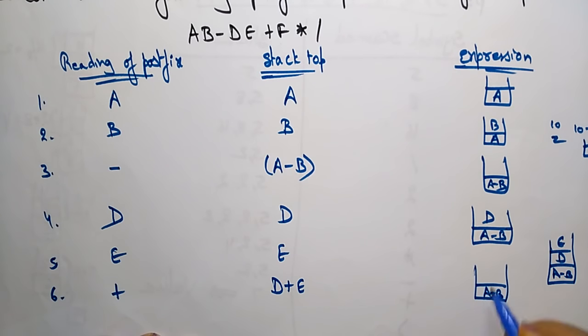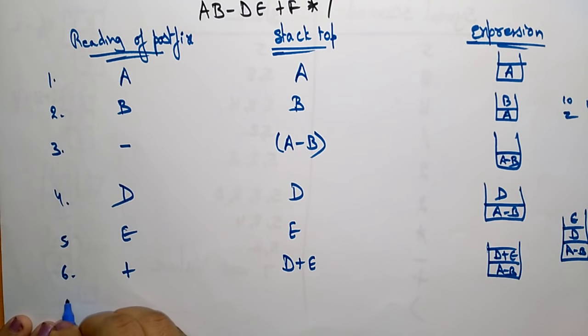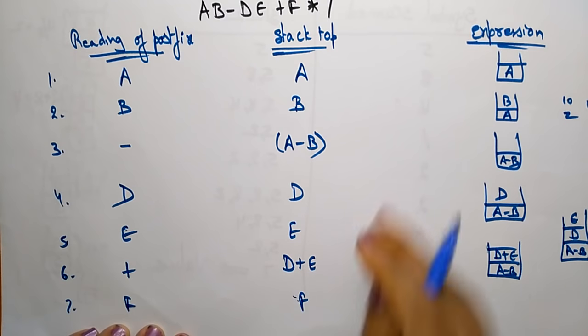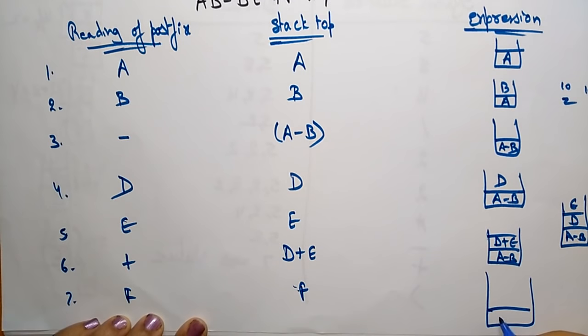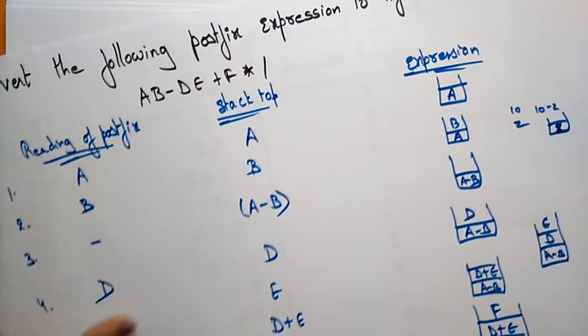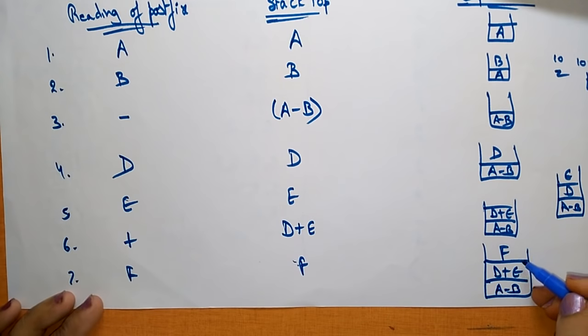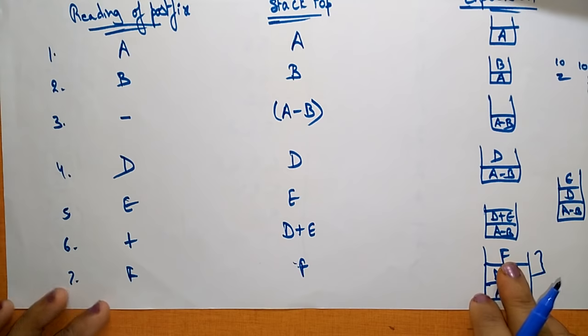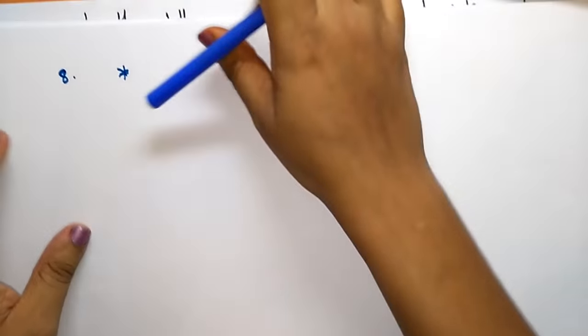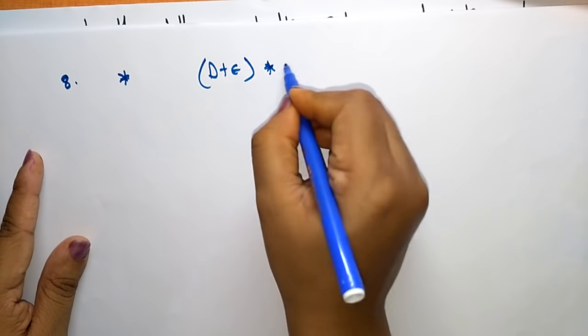Now the stack contains A minus B and D plus E at the top. Next we read F from the postfix expression and place F on the top of the stack, so the stack is A minus B, D plus E, and F. Then we read the star operator, so we pop D plus E and F, perform D plus E star F, and place that on the stack top.